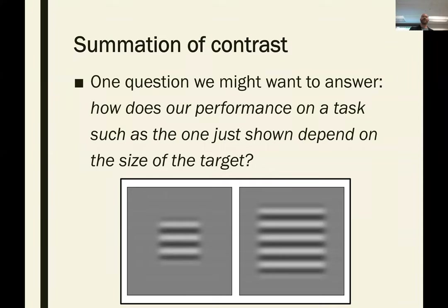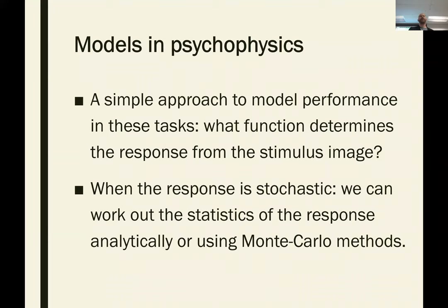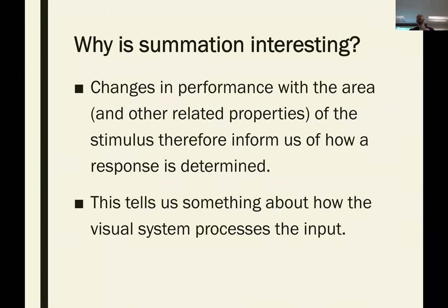What we want to know in terms of contrast summation is how does our performance on a detection task depend on the size of the target? If we're going to come up with a model of that, we want to know what function maps us from a stimulus image to what that response might be. When the response is stochastic, you can either work out the statistics of that response analytically or use Monte Carlo simulation methods. The reason why we want to look at changes in performance with area is that it tells us something about how this response is being combined — about what function is mapping the stimulus to the response — and so tells us something about how the visual system might process its input.